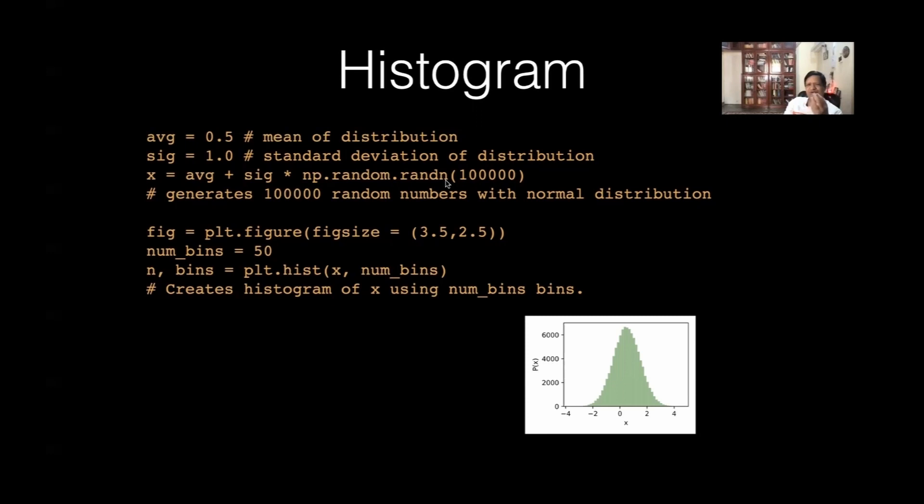Now, I will not teach you, but you should look at Wikipedia. If you do not know about normal distribution. Normal distribution is Gaussian, like this. Okay.